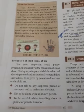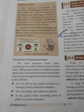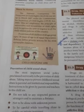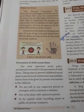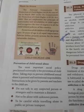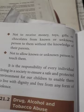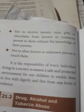The third point: be careful when travelling alone in public or private transport. In public places or public transport, do not be alone and be very much careful. The fourth point: do not receive money, toys, gifts, or chocolates from known or unknown persons without the knowledge of your parents.